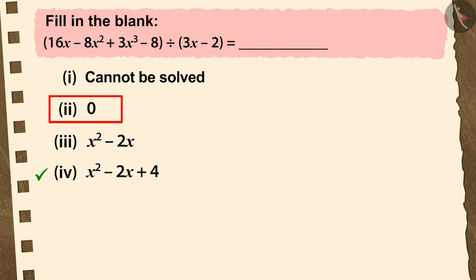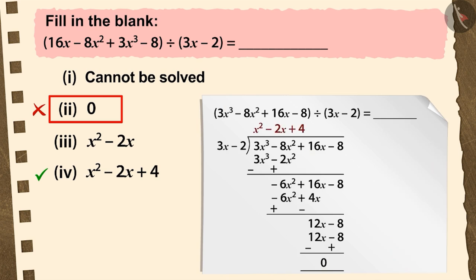If you have chosen the second option, it is a good try. But this is also an incorrect answer because in place of the quotient, you have chosen the remainder.